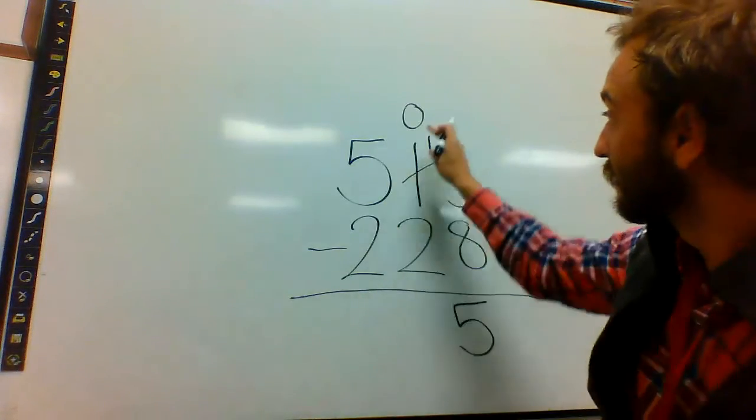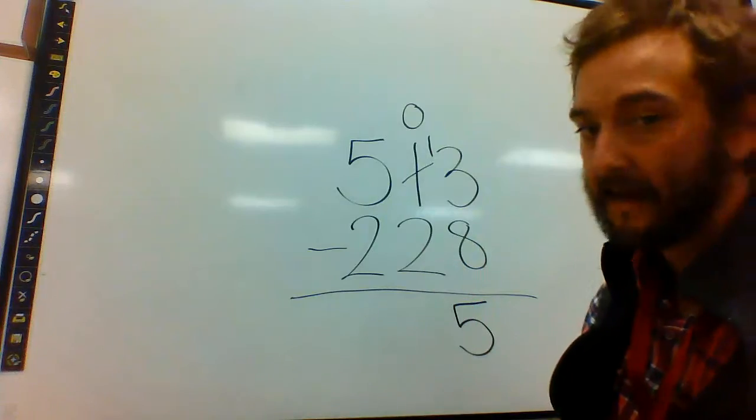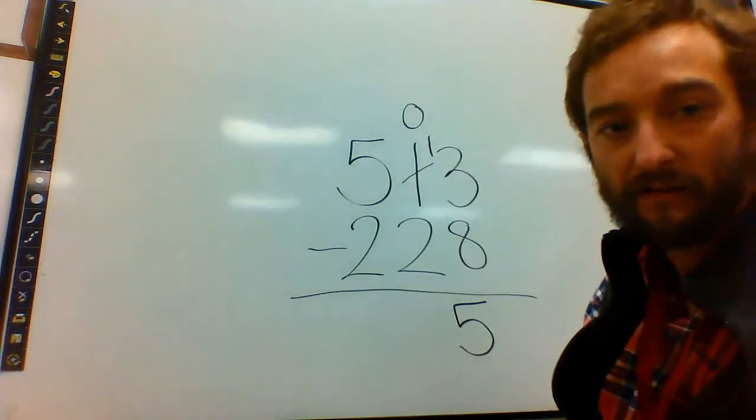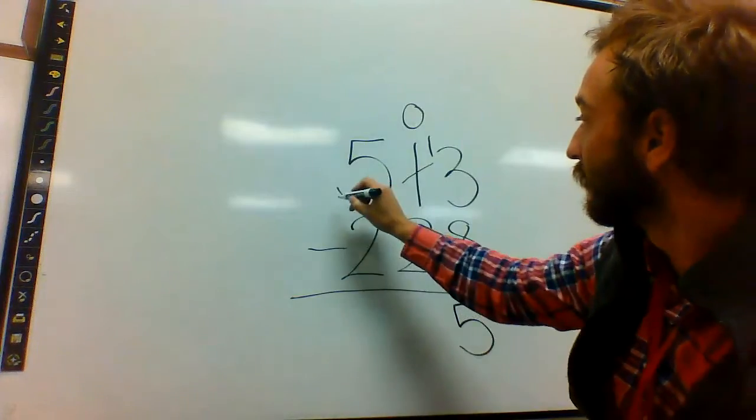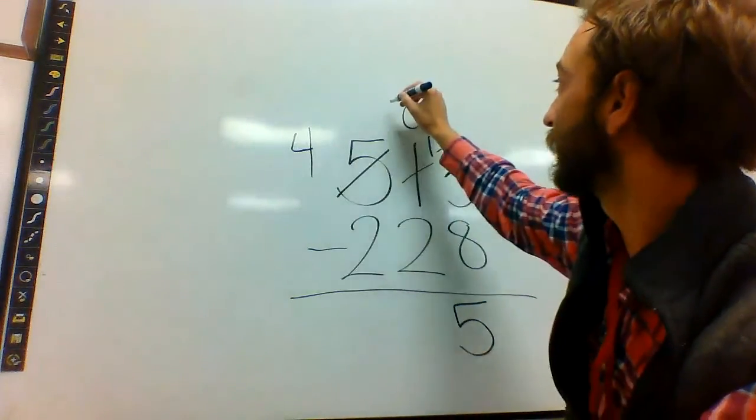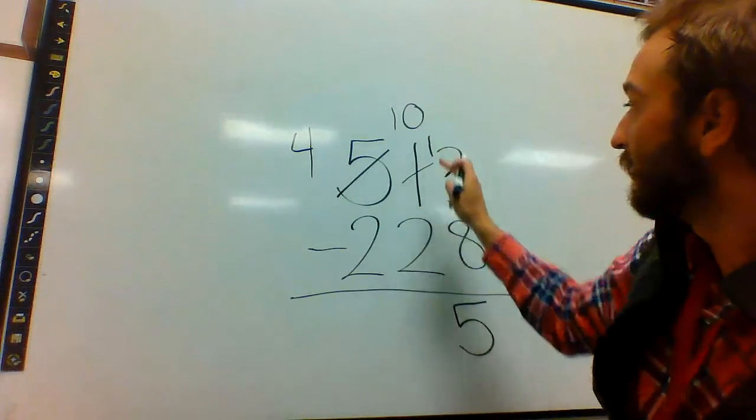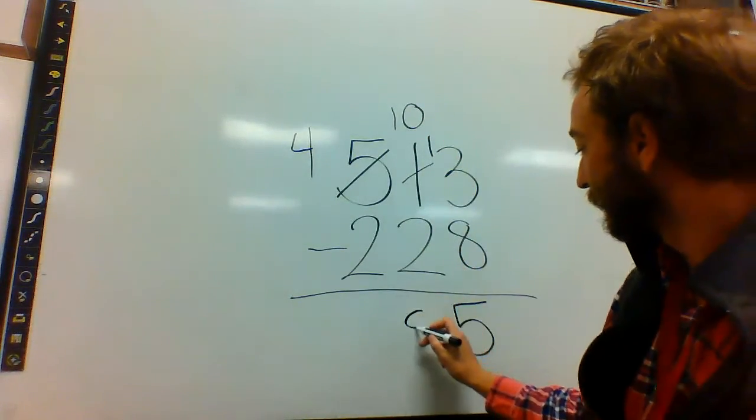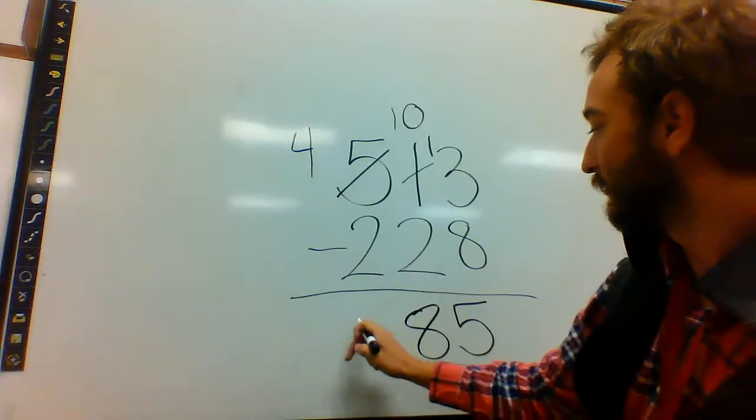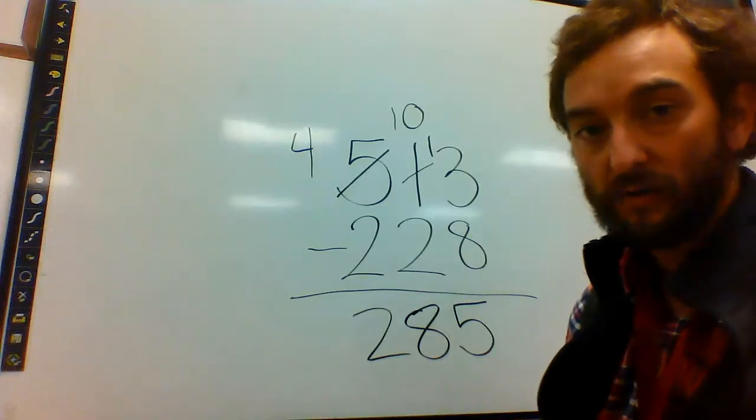Move on to the next side. 0 minus 2. I cannot do that. 2 is bigger than 0, so I have got to borrow. So I take from the 5. It becomes a 4. This becomes 10. 10 minus 2 is 8. 4 minus 2 is 2. 285.